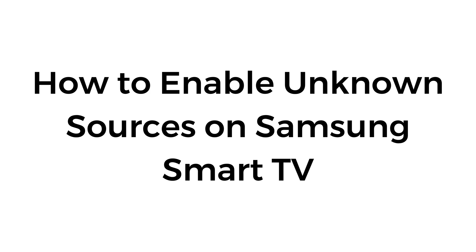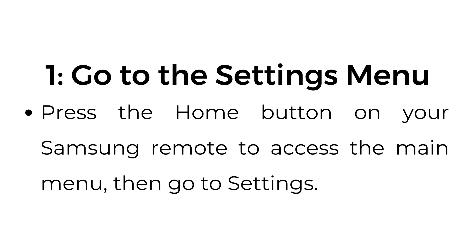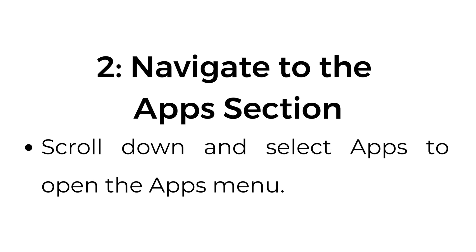How to enable unknown sources on Samsung Smart TV. Step number one: access developer mode. Go to the settings menu — press the home button on your Samsung remote to access the main menu, then go to Settings. Navigate to the apps section, scroll down and select Apps to open the apps menu.